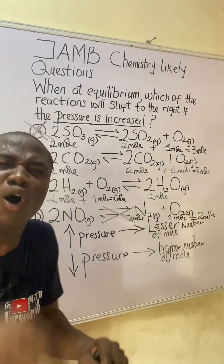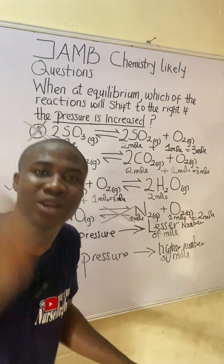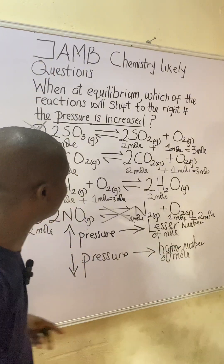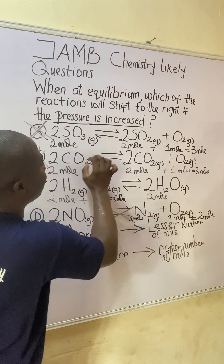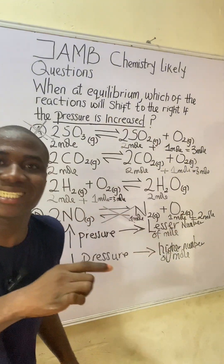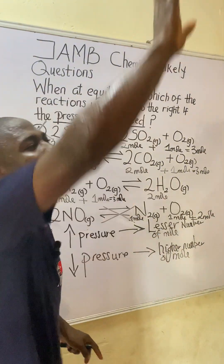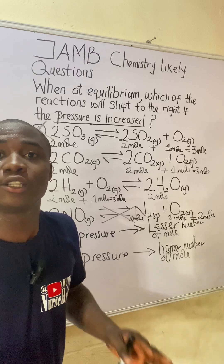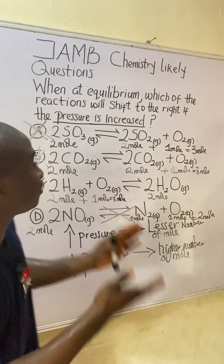These are some exceptions to how pressure affecting a reaction works. If both sides have equal number of moles, it won't affect it. Also, pressure does not affect a reaction that has solid species. If you check all the options here, they were all gases. So if you see 's' — solid — in a particular reaction, pressure will not affect that particular substance or compound.